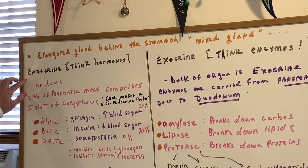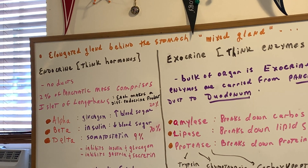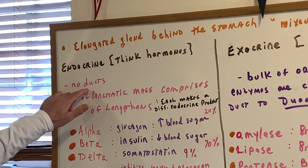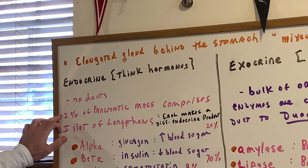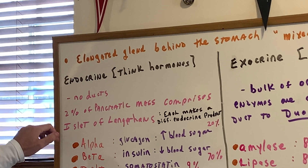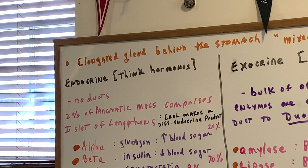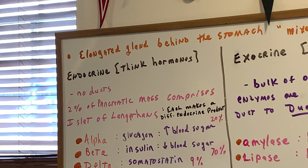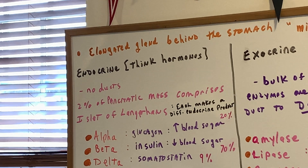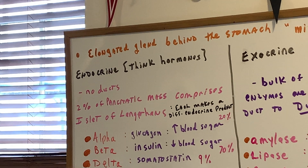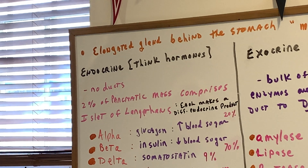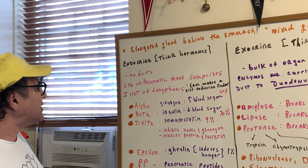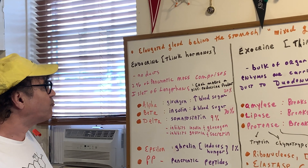Now let's go over a few things. As far as the endocrine portion goes, there are no ducts. Hormones are secreted directly into the bloodstream to a target organ. If you look under the microscope in histology class, you'll see that only 2% of the pancreatic mass is made up of the endocrine section. These group of cells is called the islet of Langerhans. Each one of these islet cells makes a different endocrine product.